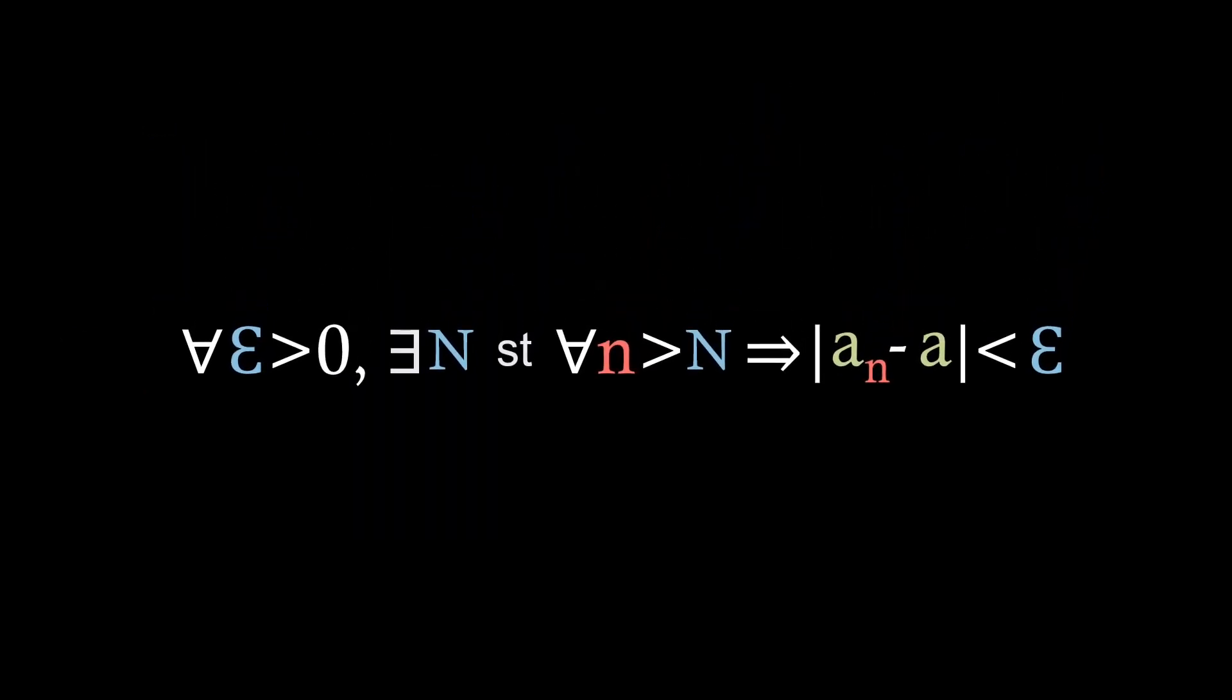So let's quickly recap that definition. Well we have that for all epsilon greater than zero there exists a big N such that for all little n greater than big N, the absolute value of the sequence a_n minus the limit a is less than epsilon.